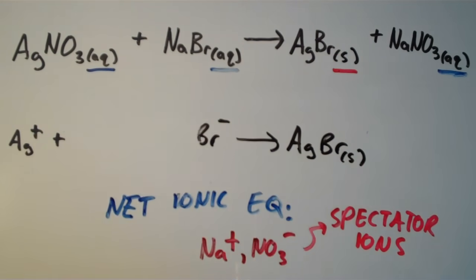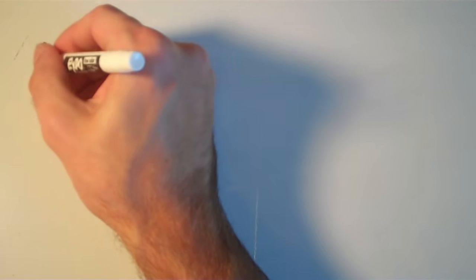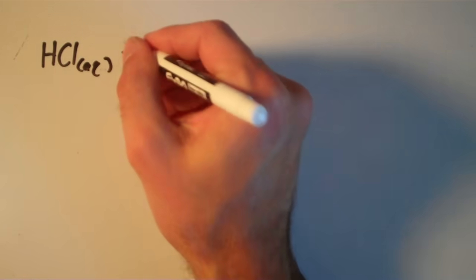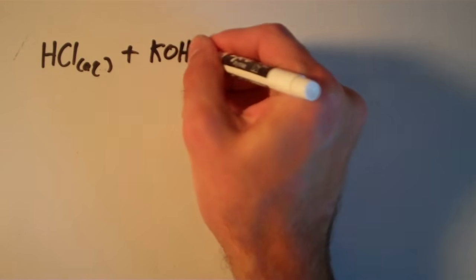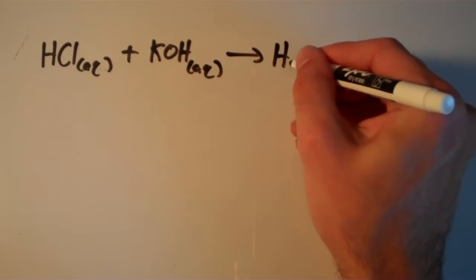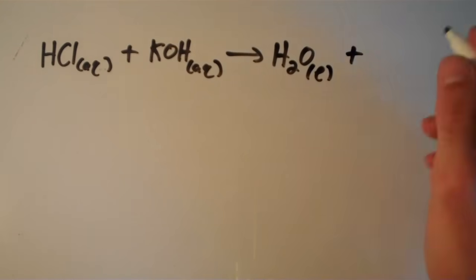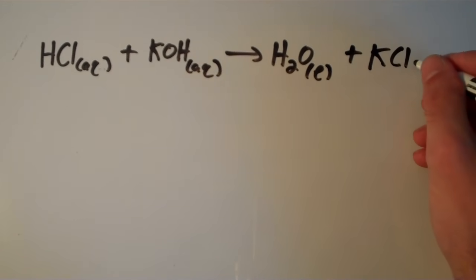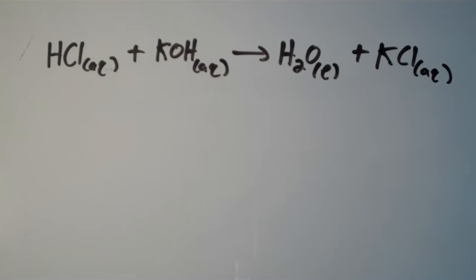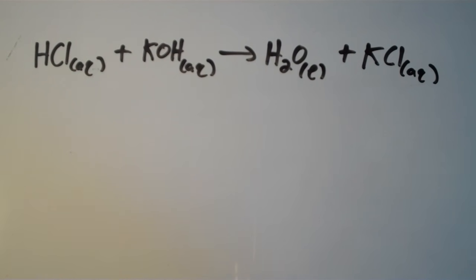So to summarize: we started with the molecular equation, then before canceling spectators we had the complete ionic equation, and after canceling the spectator ions we arrived at the net ionic equation. Let's do another example. We have aqueous HCl plus aqueous KOH yields liquid H2O plus aqueous KCl. This is the molecular equation for this reaction. Let's figure out the complete ionic equation.